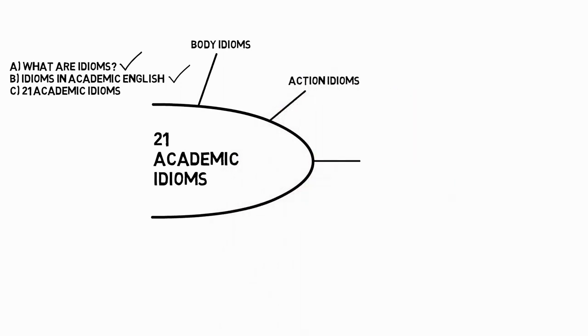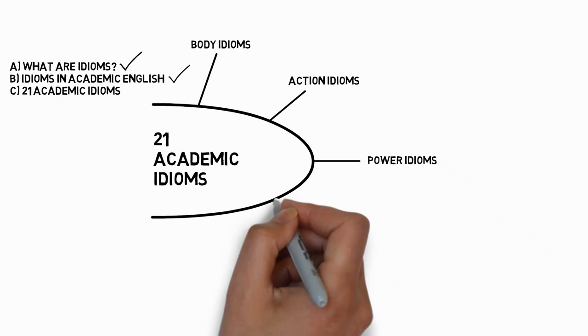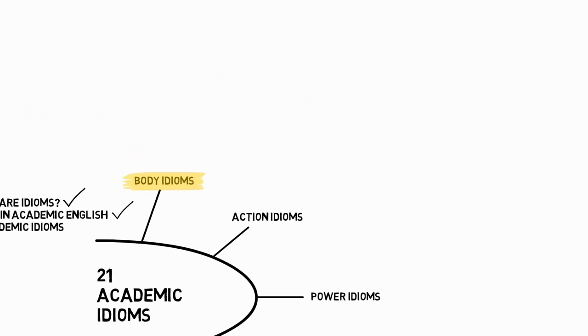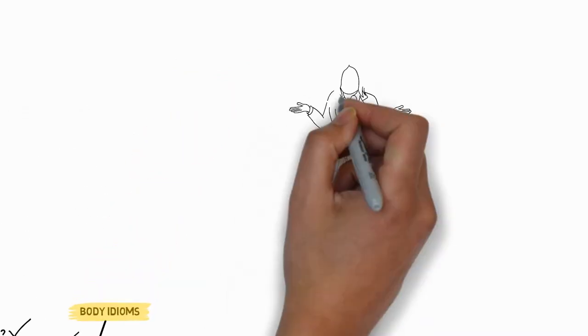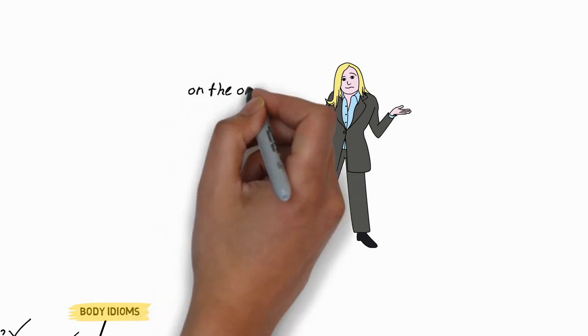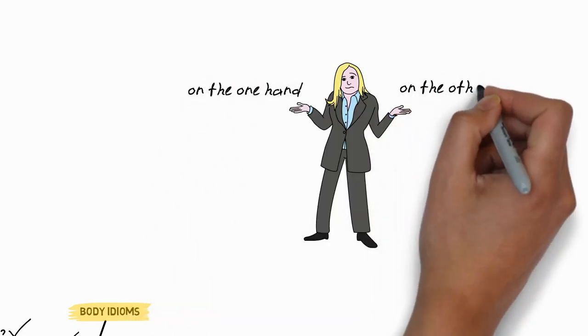So there are body idioms, action idioms, power idioms, idioms with the word gold, idioms with the word line, and a few other idioms that don't really fall into any category. First then, let's look at body idioms. So two very common idioms in academic English, which many students may already be familiar with, are on the one hand and on the other hand.